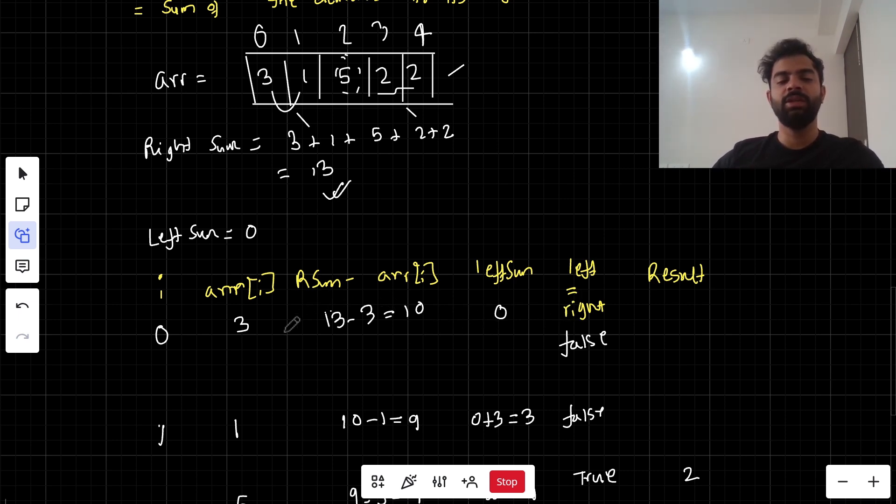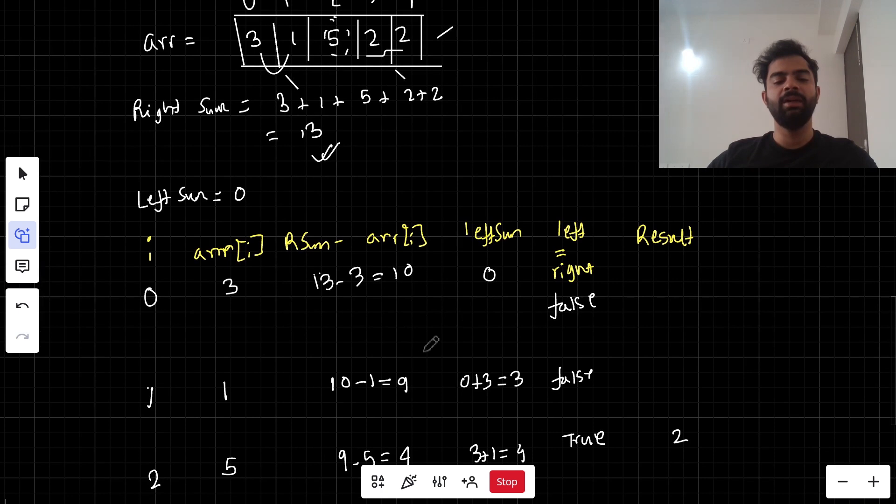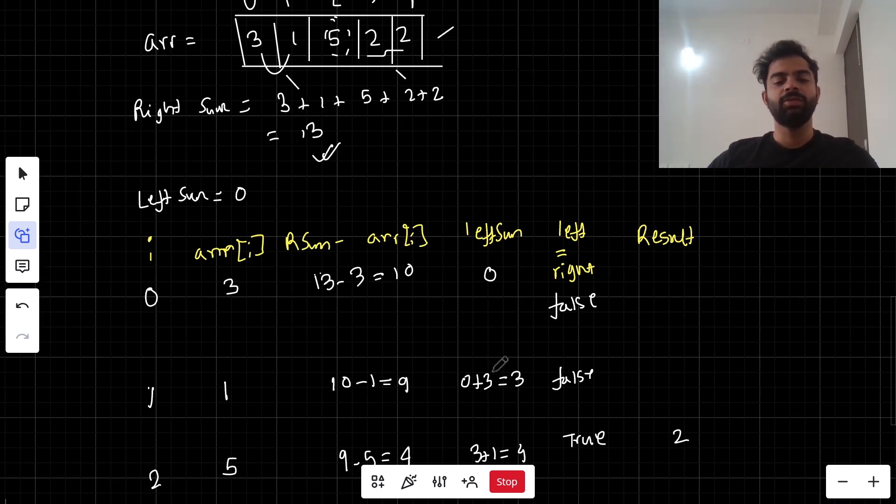Is 0 equals 13? No, that's not working. We add the array element to left sum, so it becomes 0 plus 3 equals 3. Now for the second element we have 1.